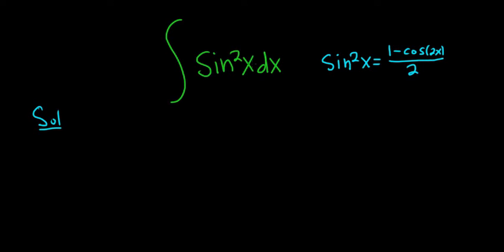The first step in this problem is to rewrite sine squared using this identity. So we can write it as 1 minus cosine 2x, all divided by 2, dx.